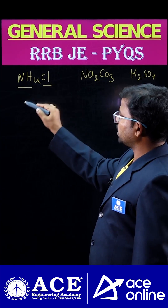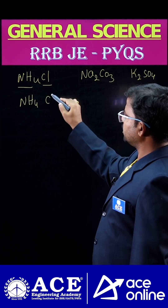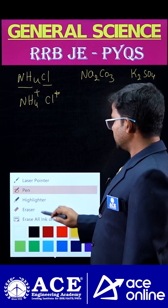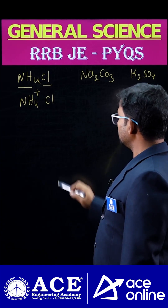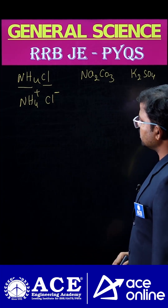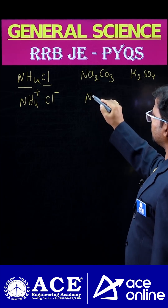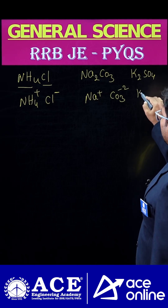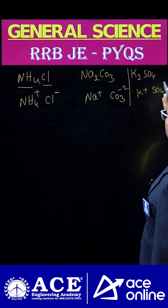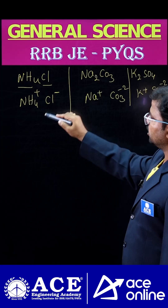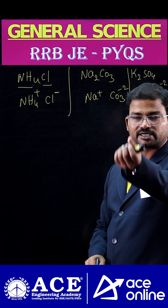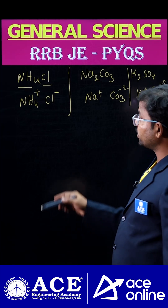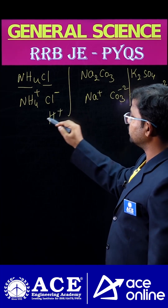First, we have to ionize these chemicals. NH4Cl ionizes into NH4+ and Cl-. Chlorine is a non-metal, so it always attains a negative charge. Na2CO3 ionizes into Na+ and CO3 2-. K2SO4 ionizes into K+ and SO4 2-. When added to water, water also ionizes into H+ and OH- ions.